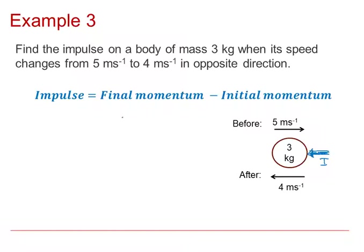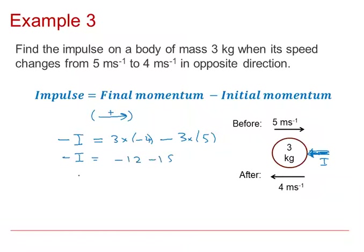Impulse equals change of momentum, taking right as positive. The impulse to the right according to my diagram is negative I, because the arrow is pointing to the left. Final momentum is 3 times negative 4 (the ball is going backwards at 4 metres per second), minus the initial momentum of 3 kilograms moving at positive 5. So minus I equals minus 12 minus 15, therefore I equals 27 Newton seconds.